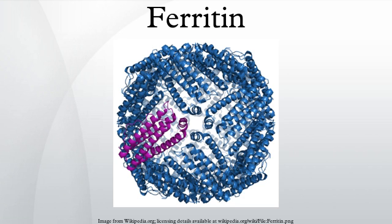In some snails, the protein component of the egg yolk is primarily ferritin. This is a different ferritin, with a different genetic sequence, from the somatic ferritin. It is produced in the midgut glands and secreted into the hemolymph, whence it is transported to the eggs.